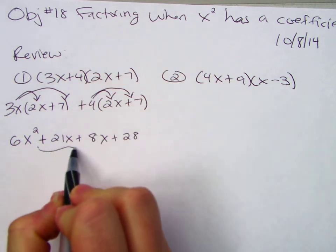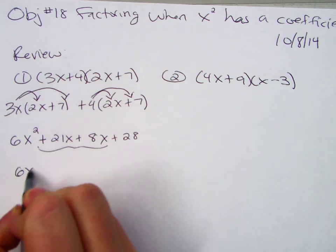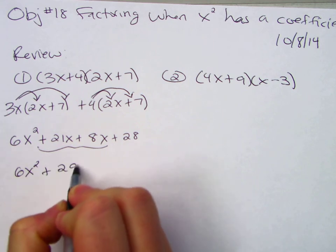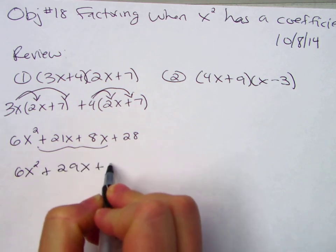And then don't forget, we combine those middle two terms, and we get 6x squared plus 29x plus 28.